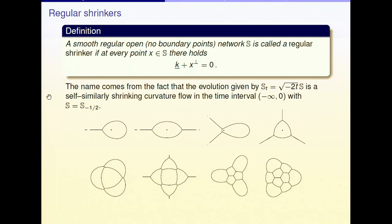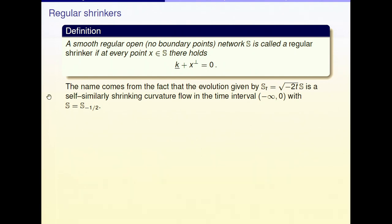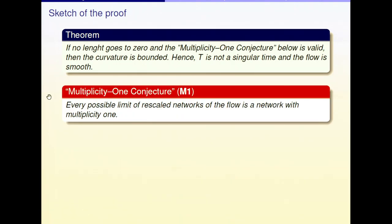This is the general framework. Now I want to apply these techniques to prove the theorem — that if no length goes to zero and the multiplicity one conjecture holds, then also the curvature is bounded. If the curvature is not bounded (or some length is not bounded below, away from zero), that would make big T a singular time — a contradiction. So the flow must be smooth.